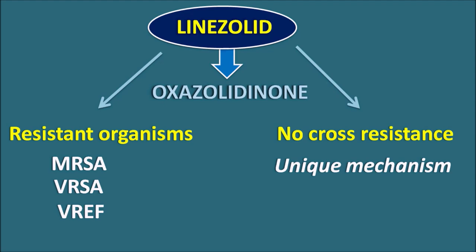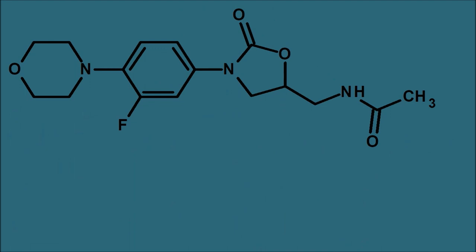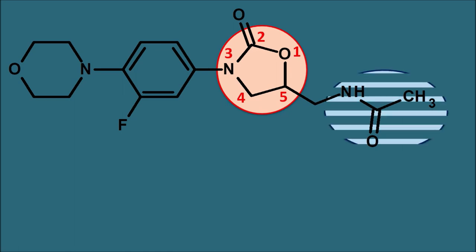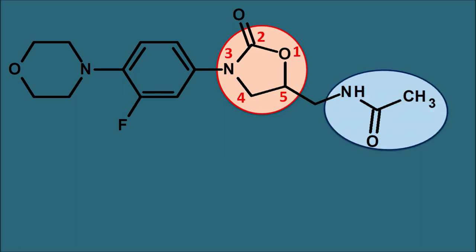Let us now see the structure of Linezolid. Linezolid belongs to the chemical class of oxazolidinones. You can see the oxazolidin ring here — oxazolidin is an oxygen- and nitrogen-containing saturated ring. Numbering from the oxygen: 1, 2, 3, 4, 5 — this is an oxazolidin with a ketone at the second position, making it an oxazolidinone. The principal functional group is an acetamide.